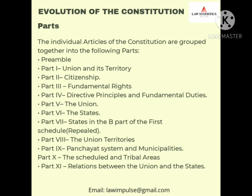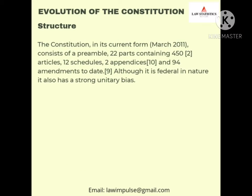The important parts begin with Part 1, which covers the union and its territory. Part 2 is citizenship. Part 3 is fundamental rights. Part 4 covers directive principles and fundamental duties. Part 5 is the union and so on. The constitution in its current form consists of a preamble, 22 parts containing 450 articles, 12 schedules, 2 appendices, and 94 amendments to date.